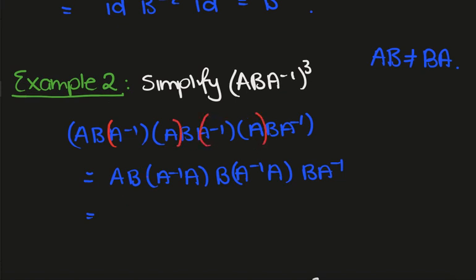So then what we end up with is AB, this is the identity times B times the identity times BA inverse, which is just AB cubed A inverse.